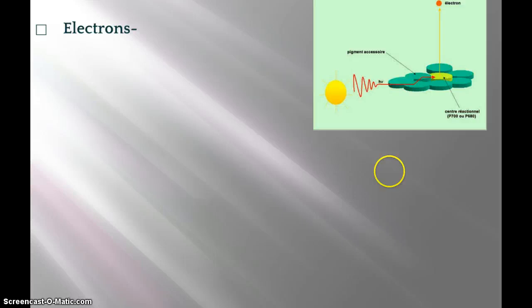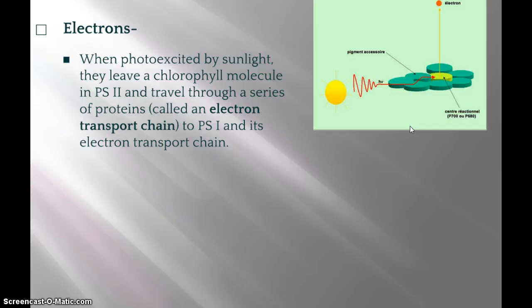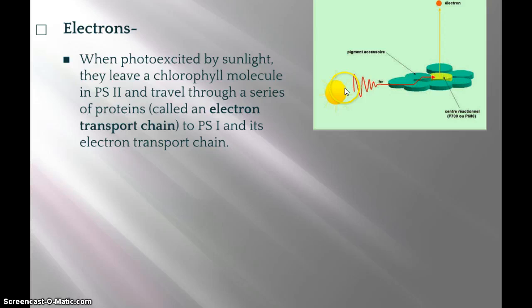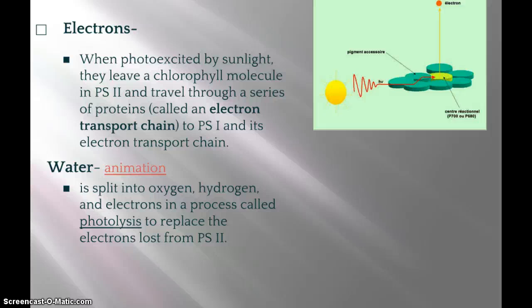Electrons are what start this whole process — when they get photo-excited by the Sun. Here the Sun is photo-exciting a reaction center. The electron goes first to photosystem 2, leaves the chlorophyll molecule, and travels through a series of proteins called the electron transport chain, eventually going to photosystem 1 where it gets taken away by another molecule. This reaction center is embedded in the thylakoid membrane.